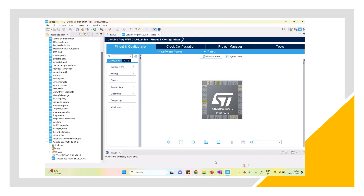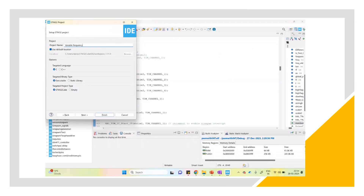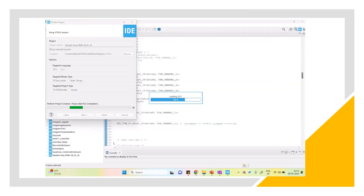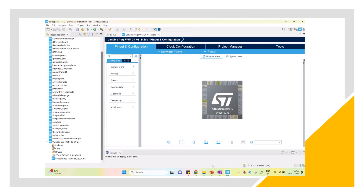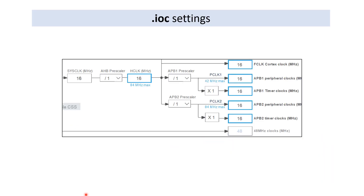Open CubeIDE and quickly create a new project. I'll walk you through the IOC file configurations. First is the clock — I am leaving the clock frequency at the default 16 MHz.